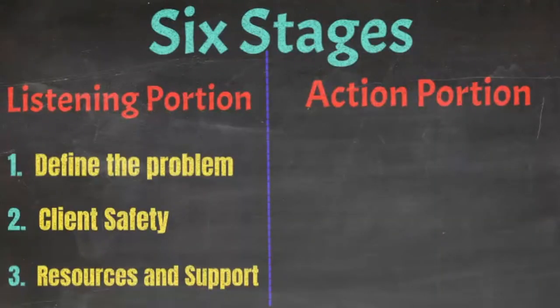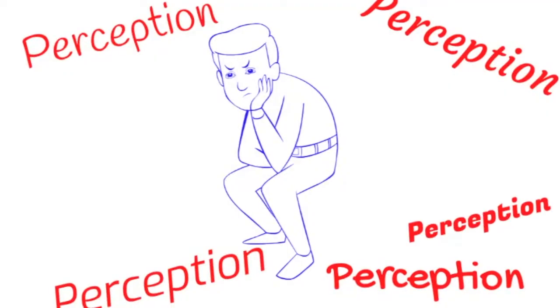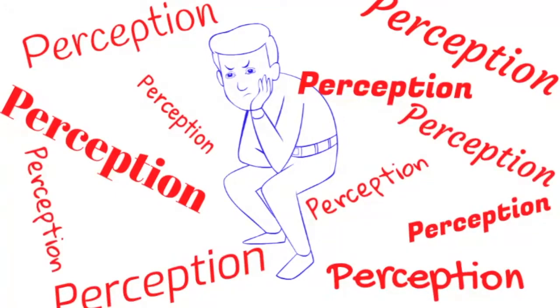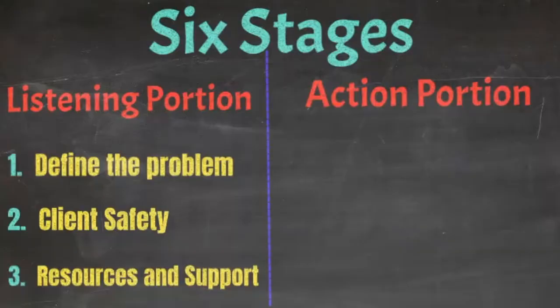The three stages for the listening portion include: the client defining the problem — what is really going on; ensuring the client's safety; and providing resources and verbal support. You don't want to define the problem for them, because what you might think is the problem is not necessarily what they perceive the problem to be. You want to ensure the client's safety, both physical and emotional, and then provide resources and verbal support.